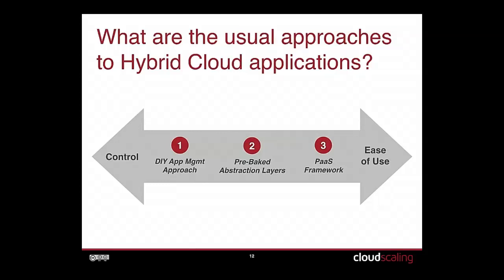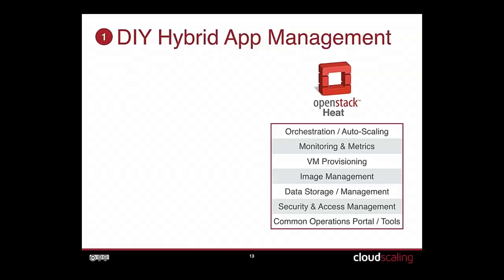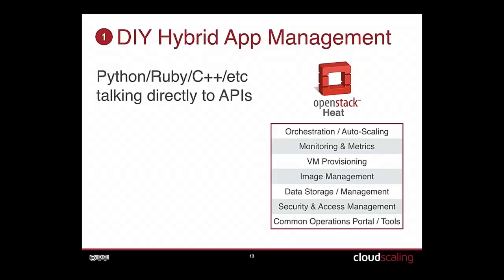Let's talk about usual approaches. We're back to this spectrum with control and ease of use. We'll go through three ways to approach hybrid cloud. Starting with DIY app management — not DIY OpenStack, but DIY application management. If you've got a really great team, extremely technical Python or Ruby guys who can speak to APIs in their sleep, that's a viable option. You can absolutely script out your own stuff — with botolibs for Python, spinning up machines in AWS is like three lines of Python.